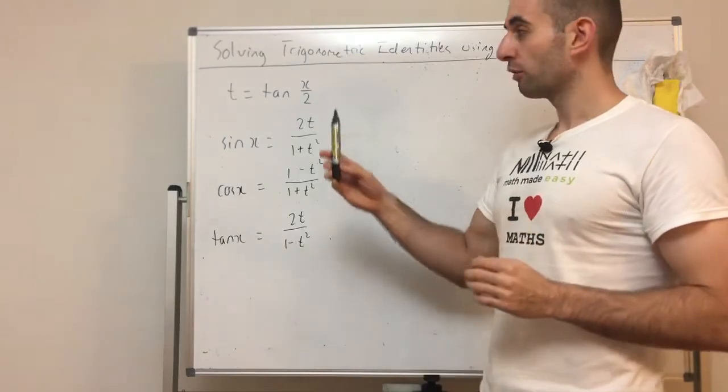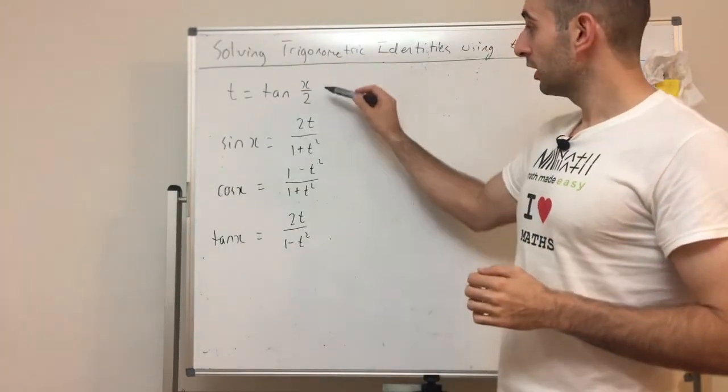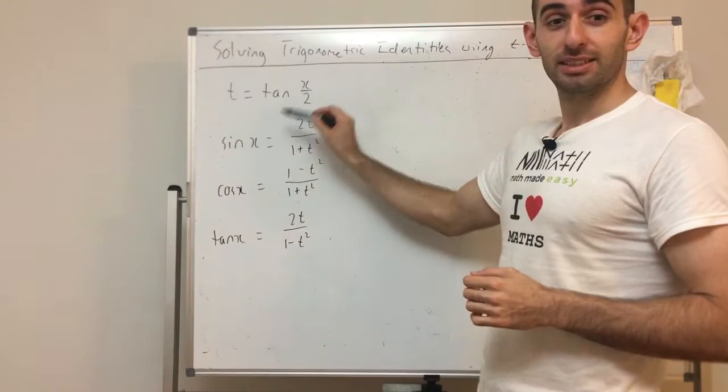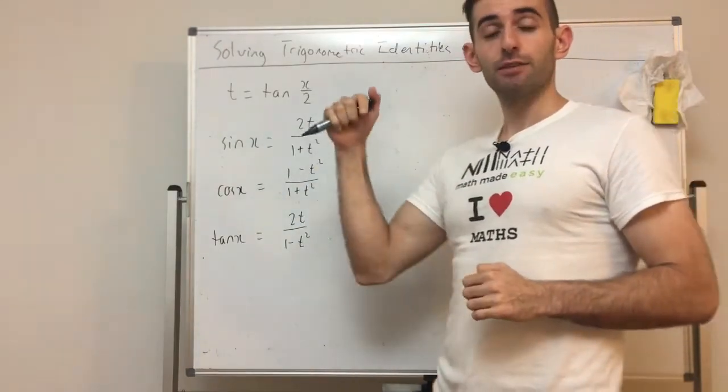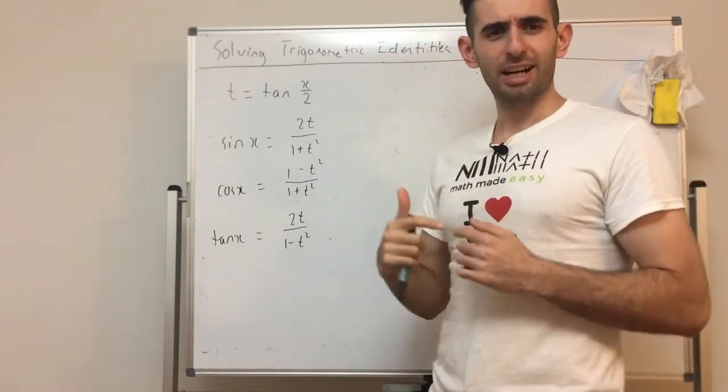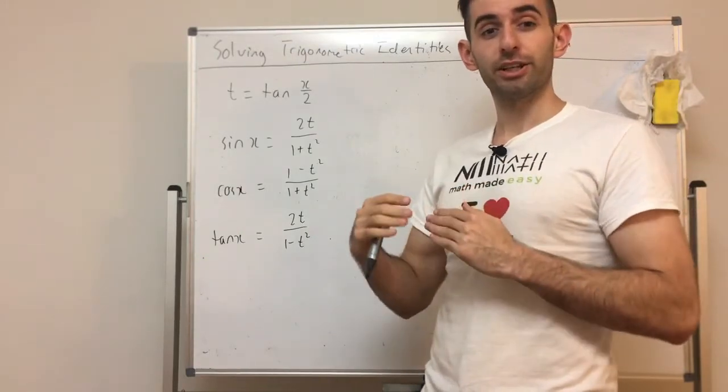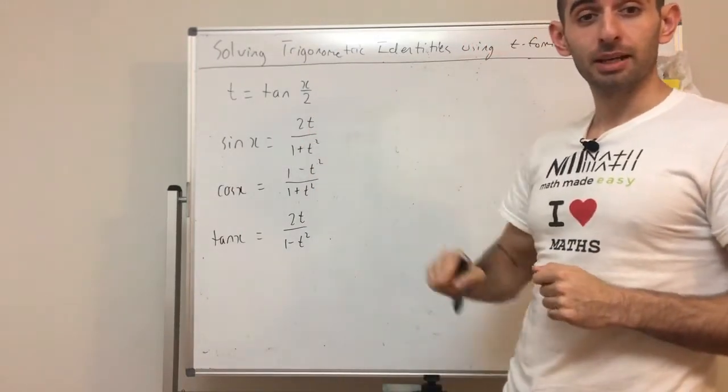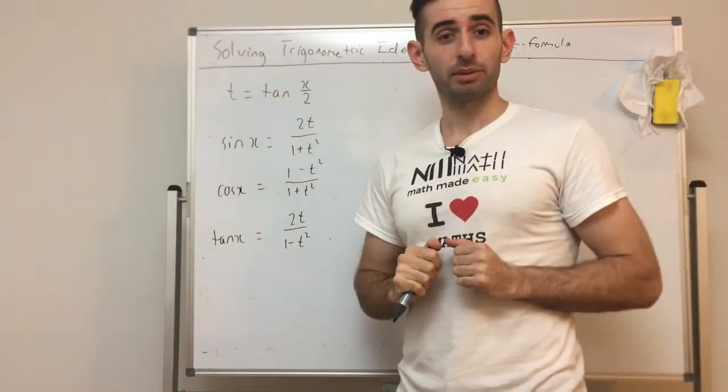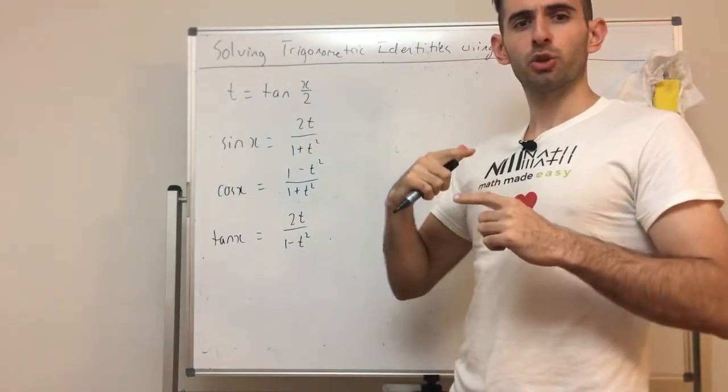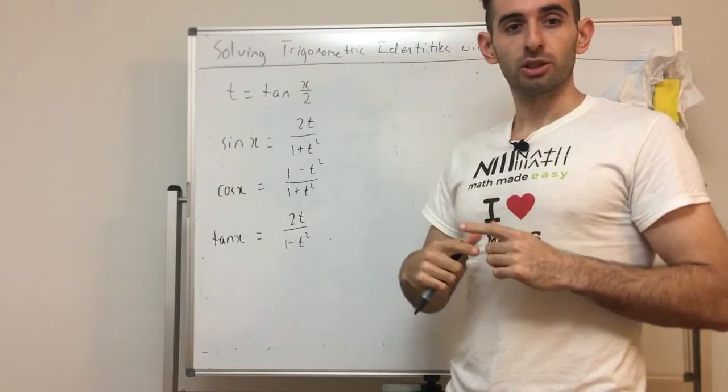These are derived from using the double angle identities because we're x on 2x so those are double angle identities. Leave a comment below if you want to see how to prove these results, where they come from. I'll do that in a different video if you want it. But here's the interesting thing with T formula. As I said, it's to do with double angles. So look what happens if I do this.